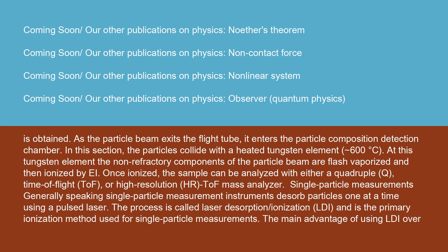As the particle beam exits the flight tube, it enters the particle composition detection chamber. In this section, the particles collide with a heated tungsten element at 600 degrees C, where the non-refractory components of the particle beam are flash-vaporized and then ionized by electron ionization (EI). Once ionized, the sample can be analyzed with either a quadrupole (Q), time-of-flight (TOF), or high-resolution (HR) TOF mass analyzer.